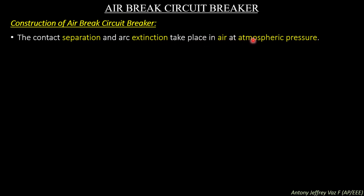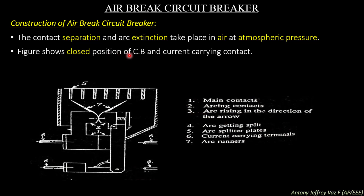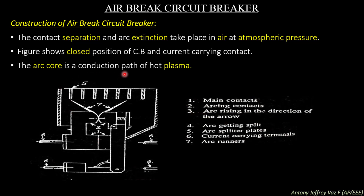In the construction of an air break circuit breaker, contact separation and arc extinction take place in air at atmospheric pressure. The figure shows the closed position of the circuit breaker with current-carrying contacts connected together. The arc core is a conduction path of hot plasma. This arc core region is where the arc is formed between the two contacts and contains the hot plasma gas that is to be extinguished by the air break circuit breaker.